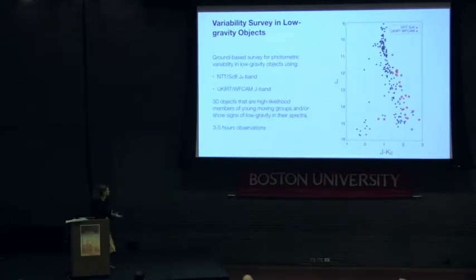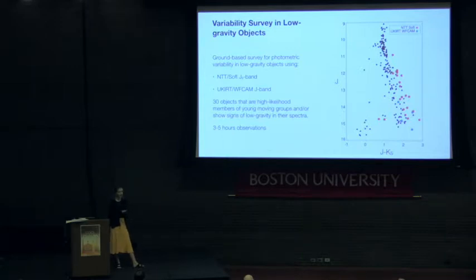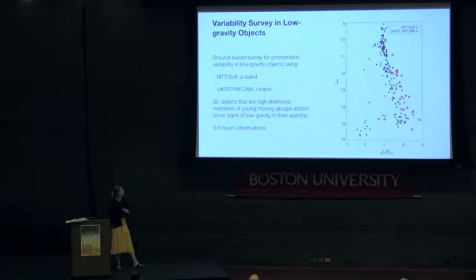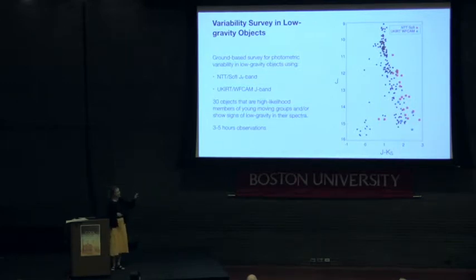This brings me to our survey. This is a ground-based J-band survey for photometric variability using the NTT and Eukert telescopes. Our survey is made up of 30 objects that are high likelihood members of young moving groups and objects that show signs of low gravity in their spectra. We observed each object for as long as possible; however, due to air mass and weather constraints, most light curves are limited to about three to five hours. The objects with measured parallaxes are plotted on a colour-magnitude diagram, and you can see they're shifted to the right of the field brown dwarf population.